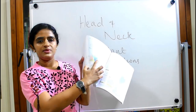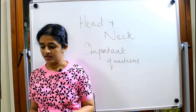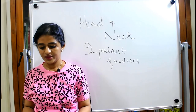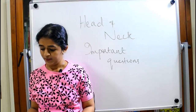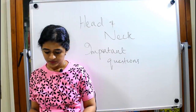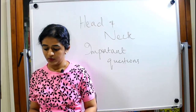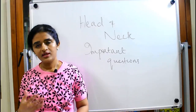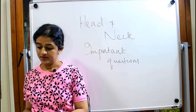Coming to the orbit and eyeball: study the schematic representation to know the boundaries of the orbit and especially its contents. The extraocular muscles and their movements — with an easy schematic diagram — are a very favorite question, always asked with nerve supply. The ciliary ganglion can also be asked as a short note.